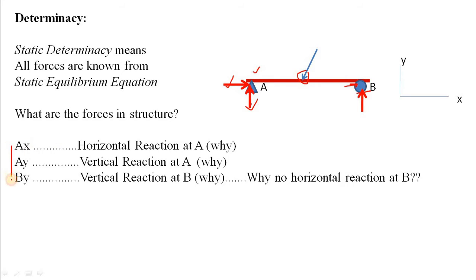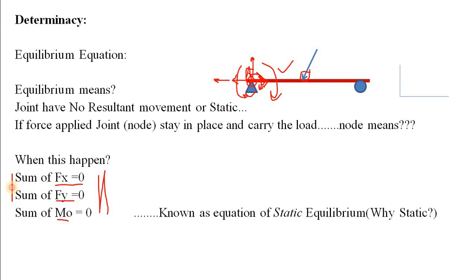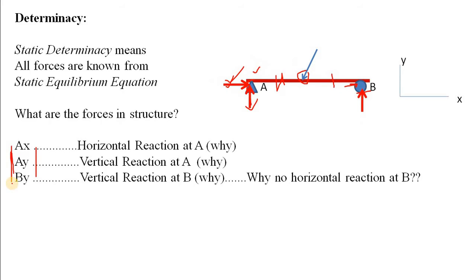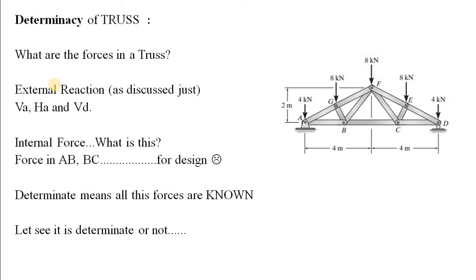So we have three external reactions. There are also internal forces — such as shear force and moment — which are unknown. If we consider only external forces, we have three unknowns. If we can find all these unknown reaction forces from three equilibrium equations, we say the structure is statically determinate. Static determinacy is always associated with the static equilibrium equations.